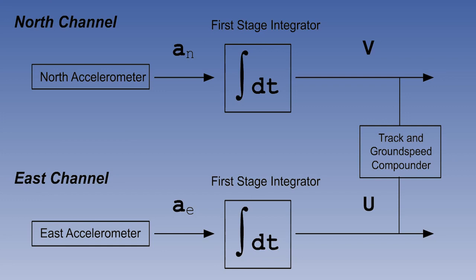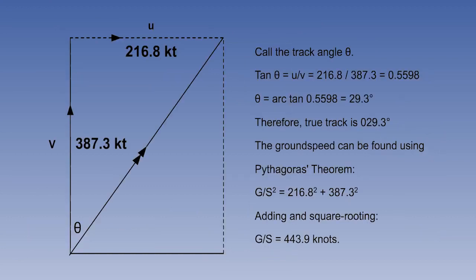These velocities will be integrated again shortly into distance gone, but even at this stage we can use them to get track and ground speed. The north and east velocities are passed to a compounder. A compounder is simply a computing device for taking velocities which have been resolved in two directions at 90 degrees to each other, and calculating a resultant. Suppose, for instance, that we are in a jet airliner, and our northerly velocity, v, is 387.3 knots, and our easterly velocity, u, is 216.8 knots.